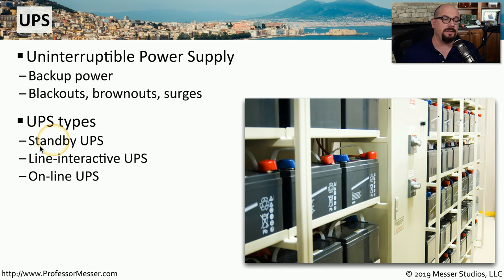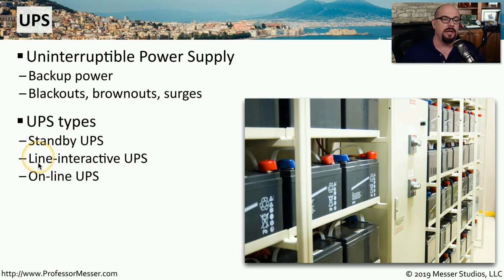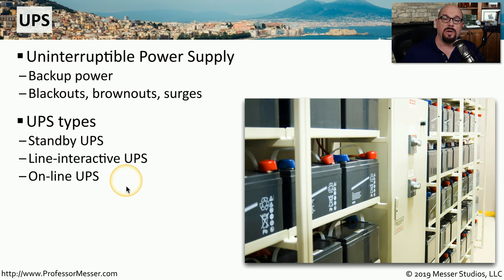One of the most inexpensive is the standby UPS, which will switch over to battery if it loses the primary power source. You might also want one that provides a stepping up of power if you start losing power in a brownout situation — those would be a line interactive UPS. An online UPS tends to be the most expensive of the three, where you're always connected to the battery side and there's no switching process if you happen to lose main power.